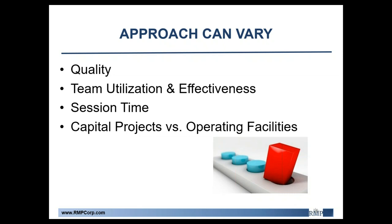In contrast, operating facilities have very different objectives. The key focus is usually to meet regulatory requirements and ensure the process is operating within acceptable risk thresholds. There's less focus on optimizing and simplifying the design since all the equipment has already been purchased and implemented. However, there are several additional items that need to be addressed in an operating facility, such as incident investigation, management of change, facility siting, damage mechanism reviews, safeguard protection analysis, and external events. These studies typically involve much smaller teams, but with individuals who have a wider range of knowledge and experience with the process.